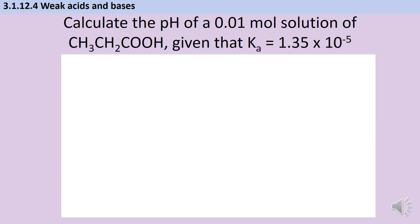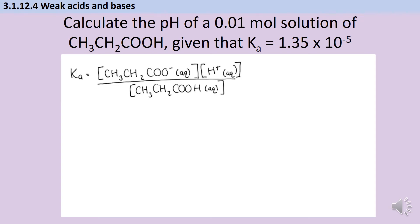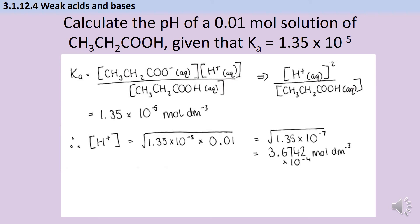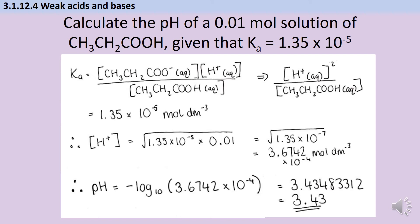Here's another example of the same type: propanoic acid with a concentration of 0.01 mol dm⁻³ and Ka = 1.35 × 10⁻⁵. Again, write an expression for Ka in full, then use the simplified version with hydrogen ions squared. The Ka value is 1.35 × 10⁻⁵, so the hydrogen ion concentration = √(1.35 × 10⁻⁵ × 0.01) = 3.6742 × 10⁻⁴ mol dm⁻³. Taking the negative log base 10 gives 3.43483312, so the final answer to two decimal places is 3.43.